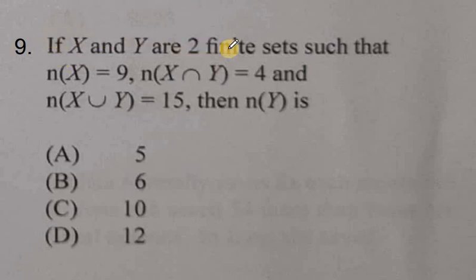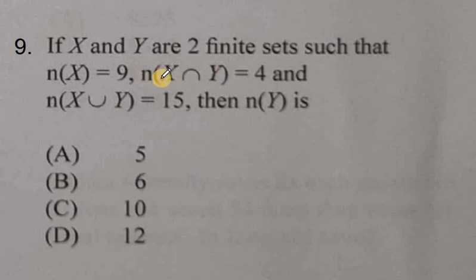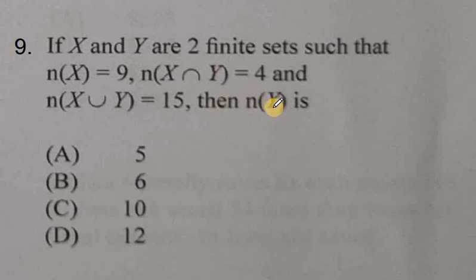If X and Y are two finite sets — meaning the members can be counted — such that the number of elements in set X is 9, the number of elements in the intersection of both set X and Y equals 4, and the number of elements in the union of both X and Y equals 15, then what is the number of elements in set Y?